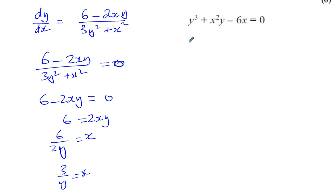Now substituting into the original equation y cubed plus x squared y minus 6x equals 0. We have 3 over y instead of x.